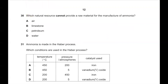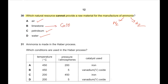Question number 30. Which natural resource cannot provide a raw material for the manufacture of ammonia? To produce ammonia we require nitrogen and hydrogen. We get nitrogen from air, and hydrogen from petroleum or water. Limestone, which is calcium carbonate, does not contain any of the required components for ammonia. So B, limestone, is the correct answer.